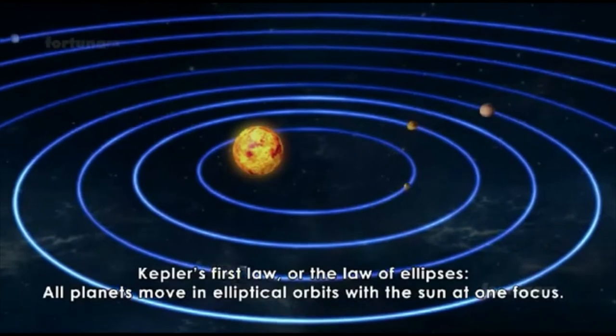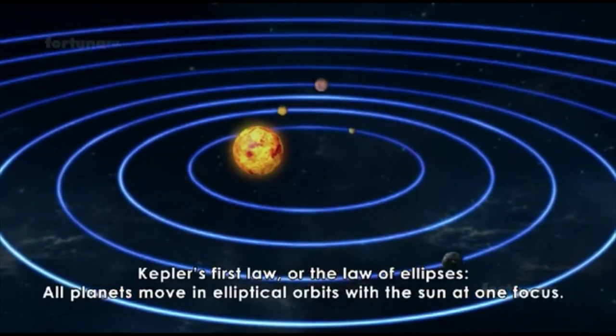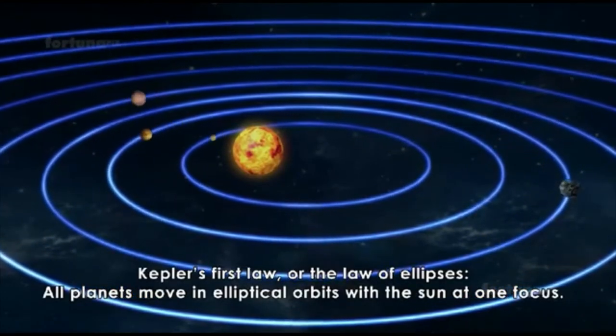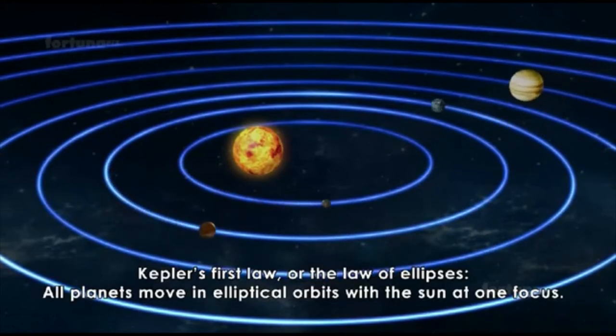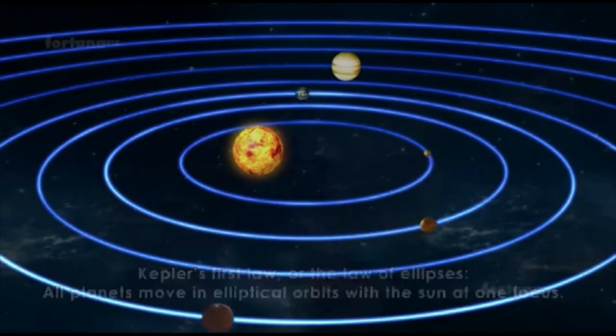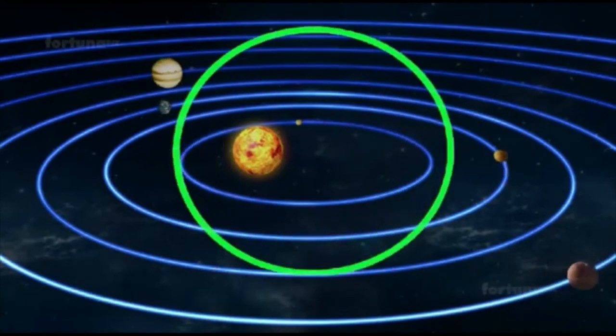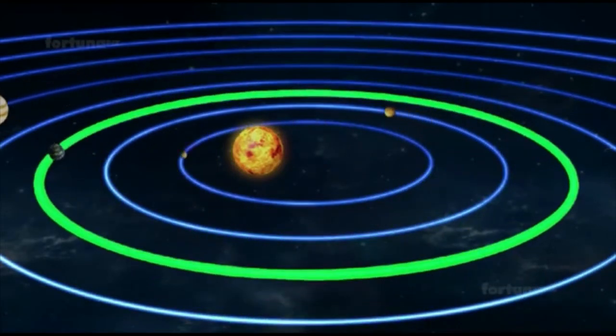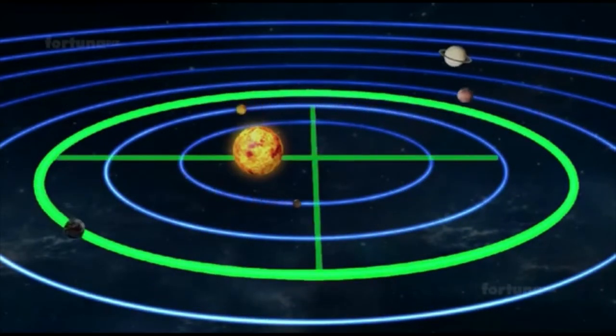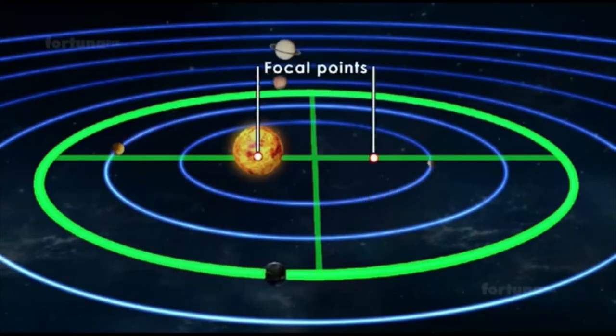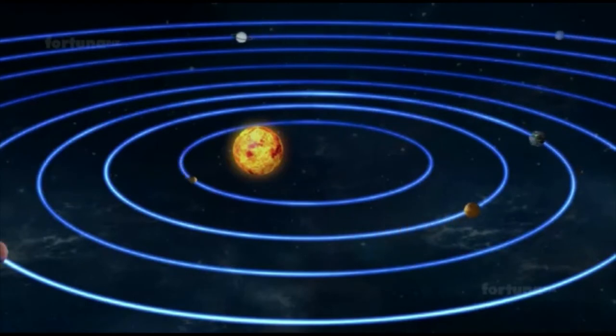Kepler's first law, or the law of ellipses, states that all planets move in elliptical orbits with the Sun at one focus. An ellipse resembles a stretched out circle. The Sun is not at the center of the ellipse but at one of its two focal points. The other focal point, marked with a lighter dot, has no physical significance for the orbit.